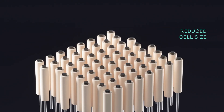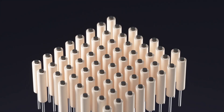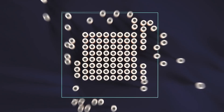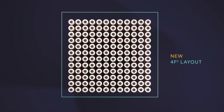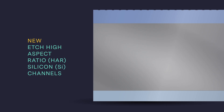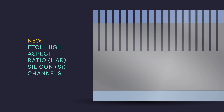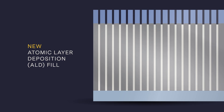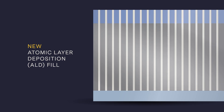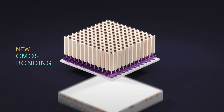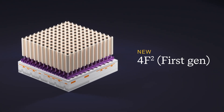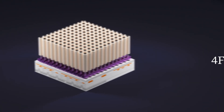In the 4F squared approach, the word lines and bit lines are rearranged into a more efficient layout. This architecture requires high aspect ratio etch to form channels, which are then filled using Atomic Layer Deposition, or ALD. In addition, a CMOS wafer is bonded to the backside of the array, which requires copper plating.